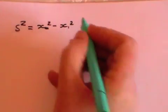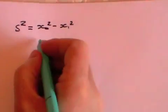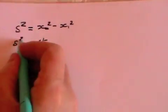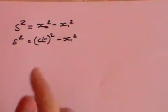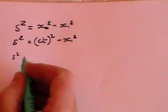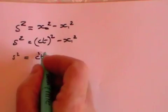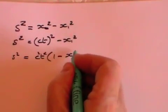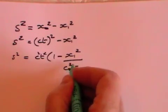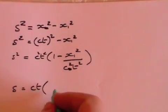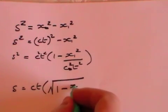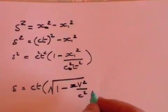Let's consider this term s squared, which equals x naught squared minus x1 squared. x naught is c times t, so we can say that s squared equals c squared t squared minus x1 squared. Dividing through by c squared t squared, we get s squared equals c squared t squared times 1 minus x squared over c squared t squared. Taking the square root, s equals ct times the square root of 1 minus v squared over c squared, where v squared equals x squared over t squared.